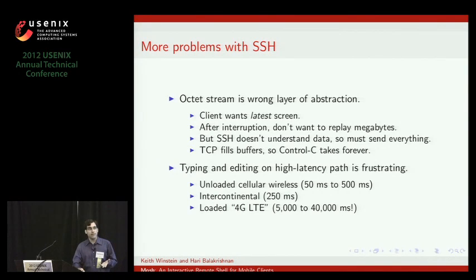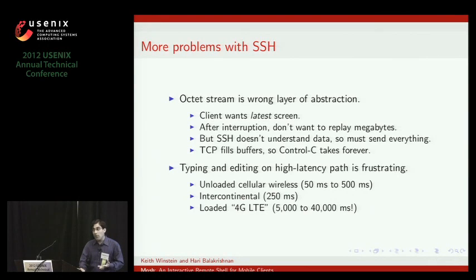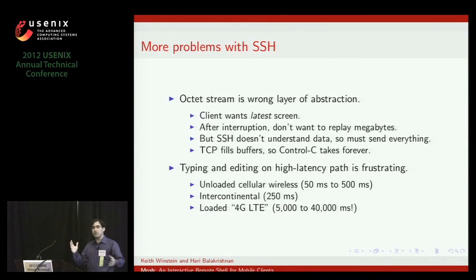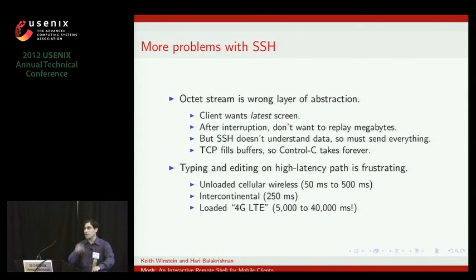If you have an interruption in your connectivity for, let's say, five seconds, you really just want to know what should I be looking at now. But SSH doesn't understand what it's sending, so it has to send you everything the application has printed out. It could be megabytes just to get you to that current screen state. And TCP fills up all these network buffers, so then you're getting all this output from a runaway process in your Control-C. This is not a new problem to anyone here. And then it keeps coming, and this is just terrible.